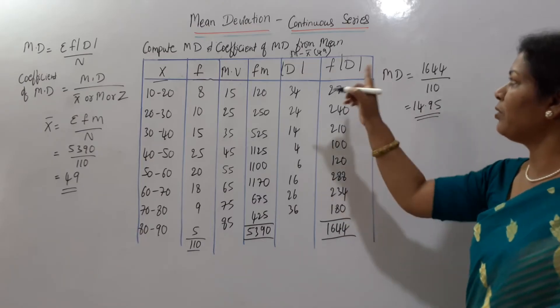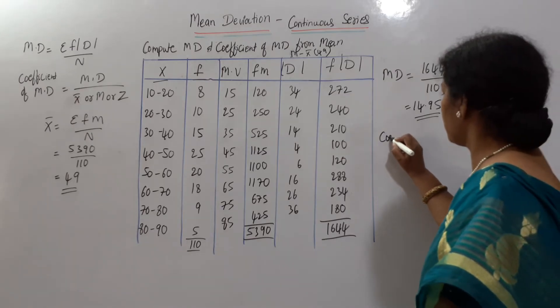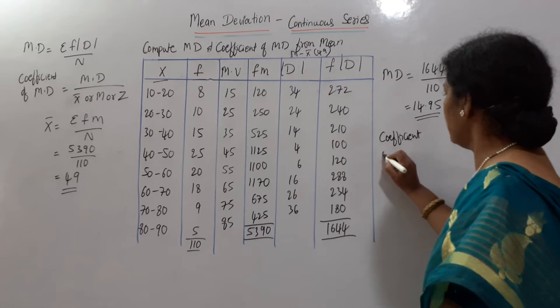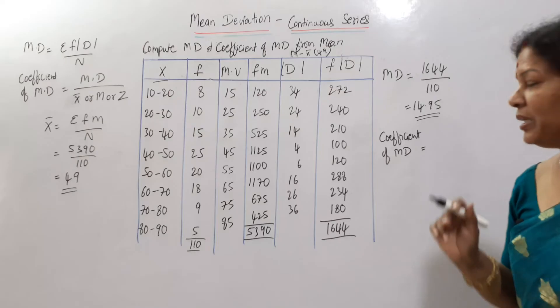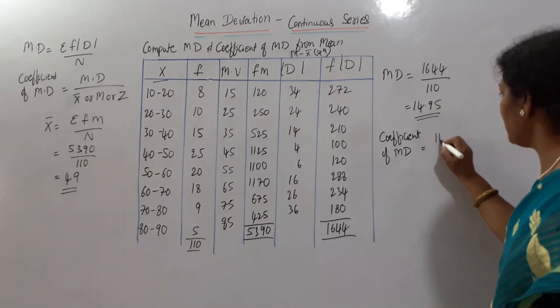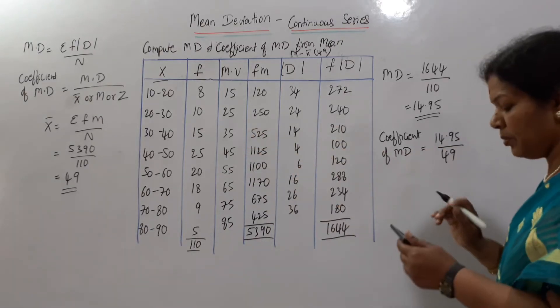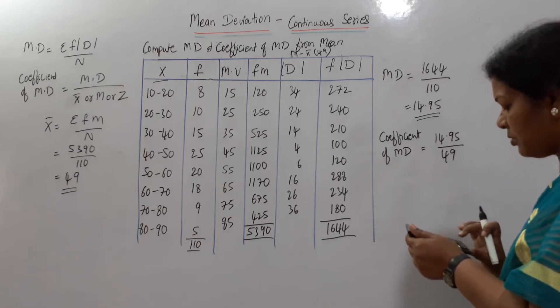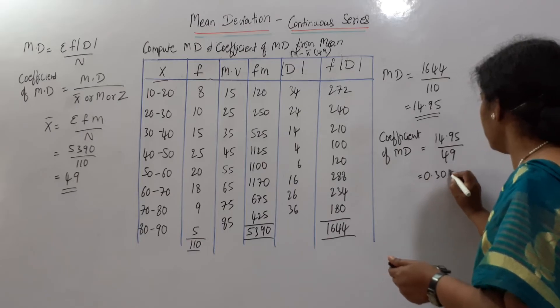This is mean deviation and also coefficient of mean deviation. Coefficient of mean deviation formula is mean deviation by mean. Mean deviation is already we got it, 14.95 divided by mean. Mean is 49. 14.95 divided by 49. It comes to 0.305.